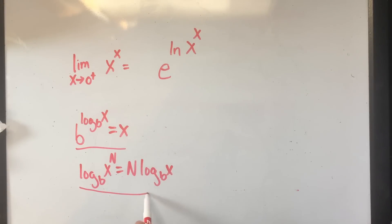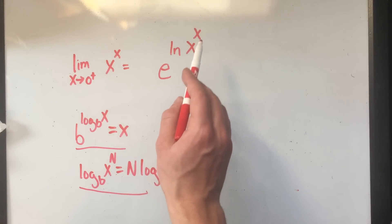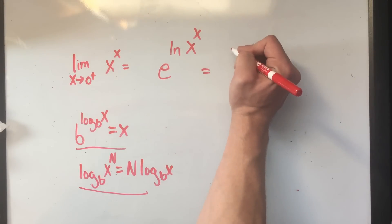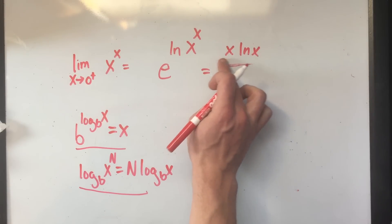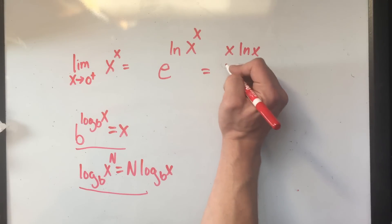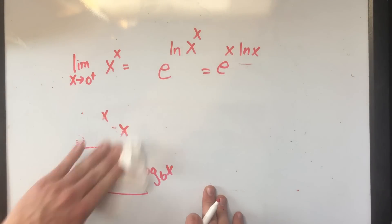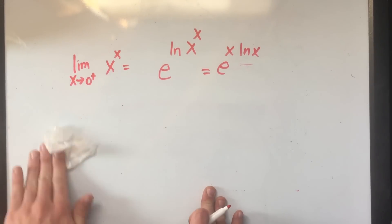Now I'm going to do this. So that x to the x, that x is in the exponent. So I'm going to write it as a coefficient. So that's x times ln x in the e power. I've used my properties of logarithms, I'm going to erase those.